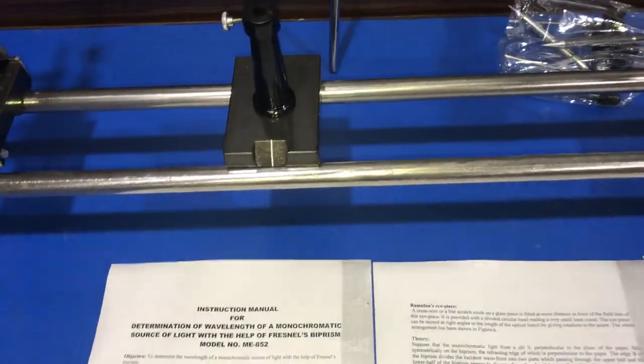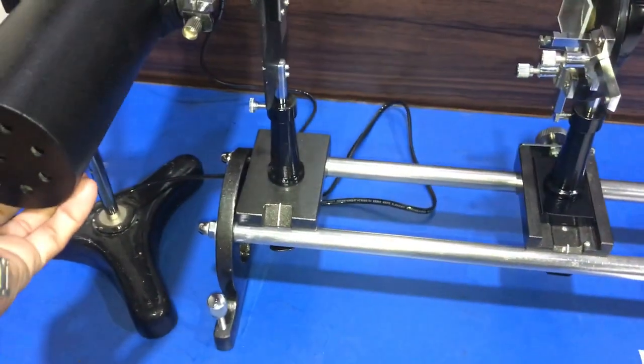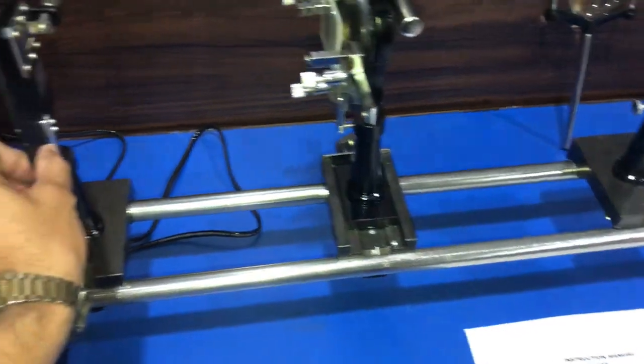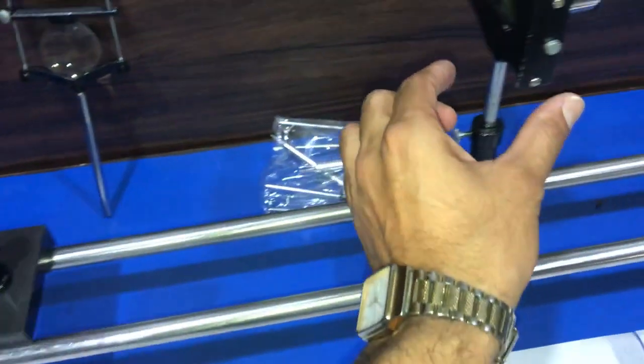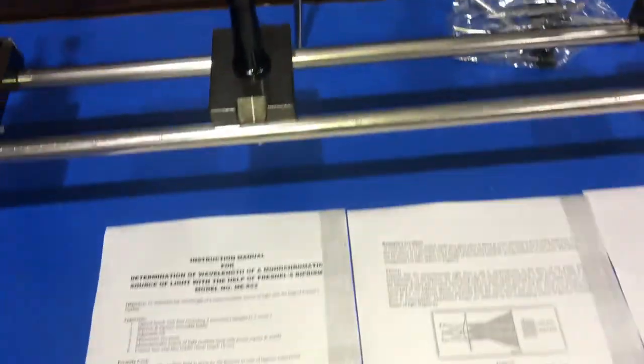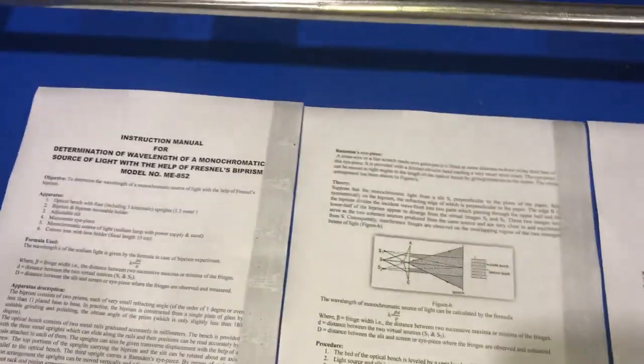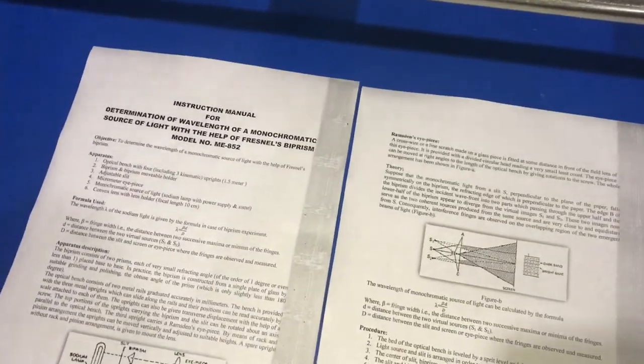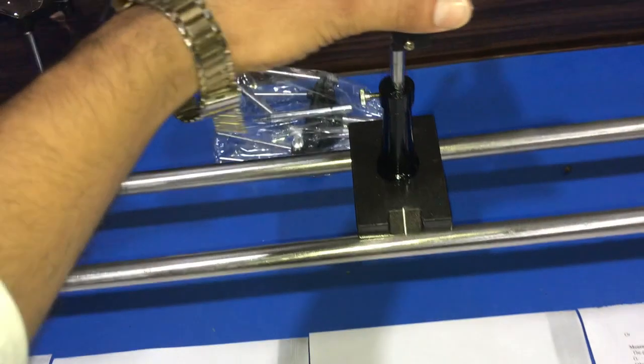Now in order to perform this experiment, first we align the sodium source, slit, Fresnel biprism, and eyepiece in proper alignment as mentioned in the procedure of the manual. When proper alignment is formed and we observe through this eyepiece, we observe straight parallel fringes.